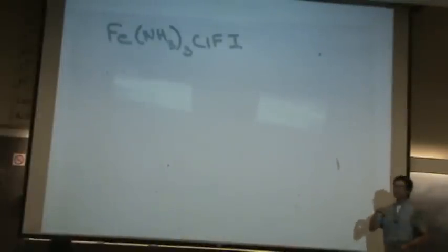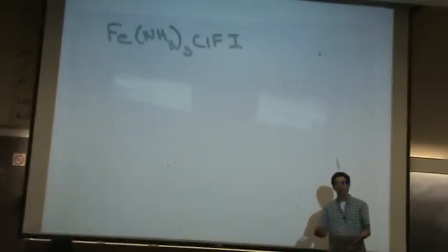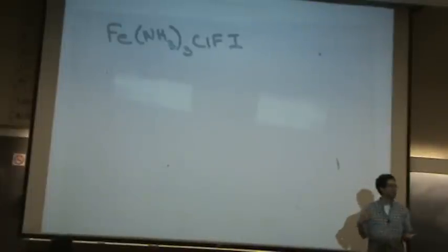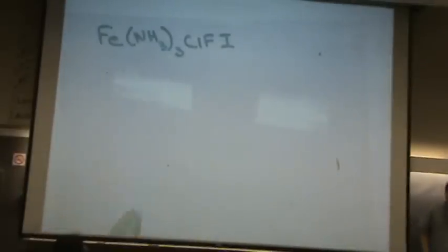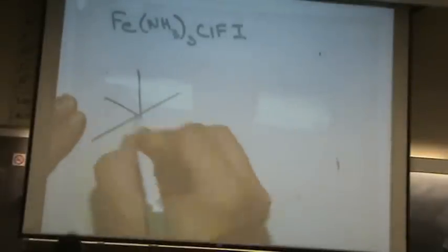I'm thinking geometric isomers first. What kind of geometric isomers will I draw here? Mer and fac, because there's a threesome. Because there's three, I'm thinking fac and mer. There's no two, so there's no cis-trans here. And again, it's octahedral. There's six ligands.